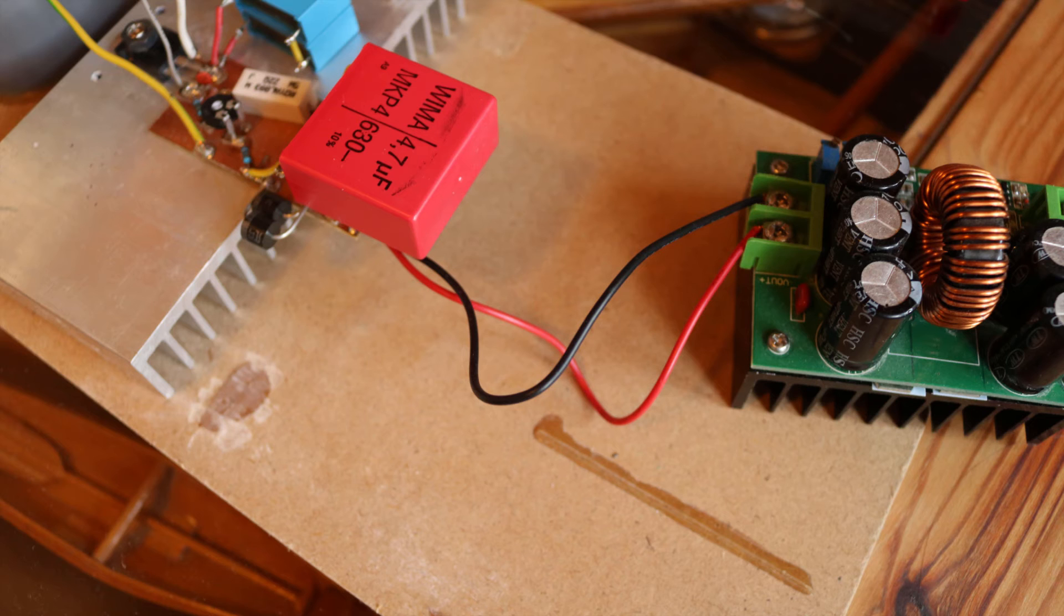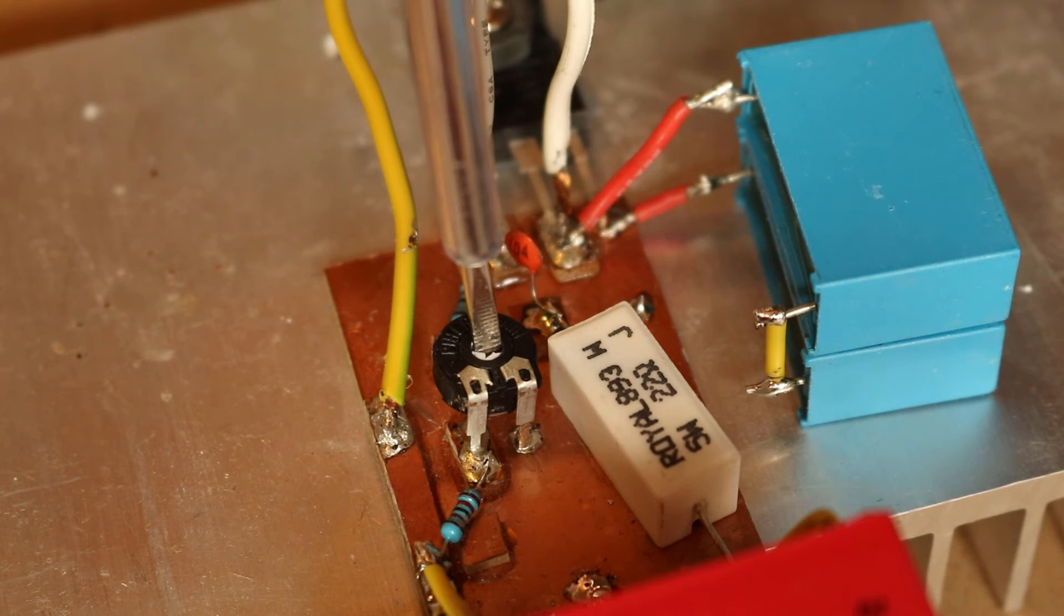Only then you can connect the Tesla coil to either 31V DC or 48V AC. After that you slowly turn the potentiometer to the left side until you see the arcs.